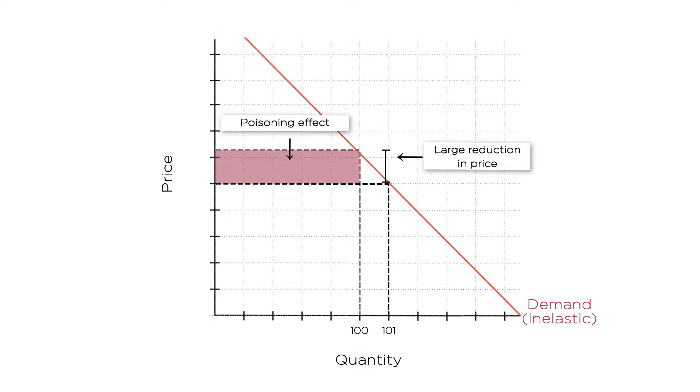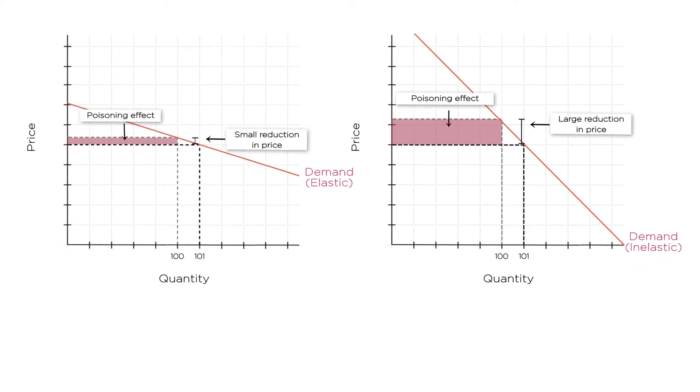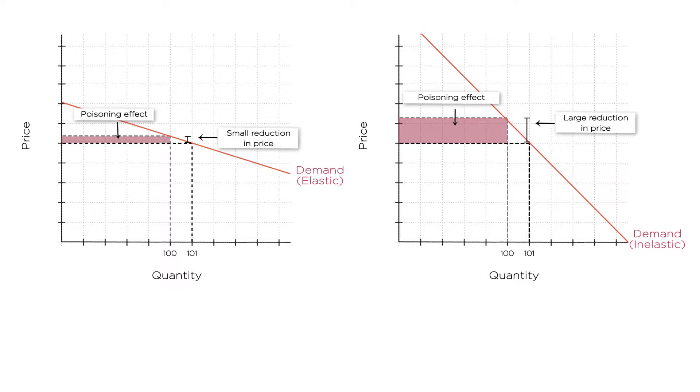For these inelastic goods, the monopolist has less incentive to sell more, since these extra sales greatly reduce the price he can charge for previous sales. Taken together, this means that relative to competitive market, monopolist will sell less, and therefore price higher, as the demand for the good is more inelastic.